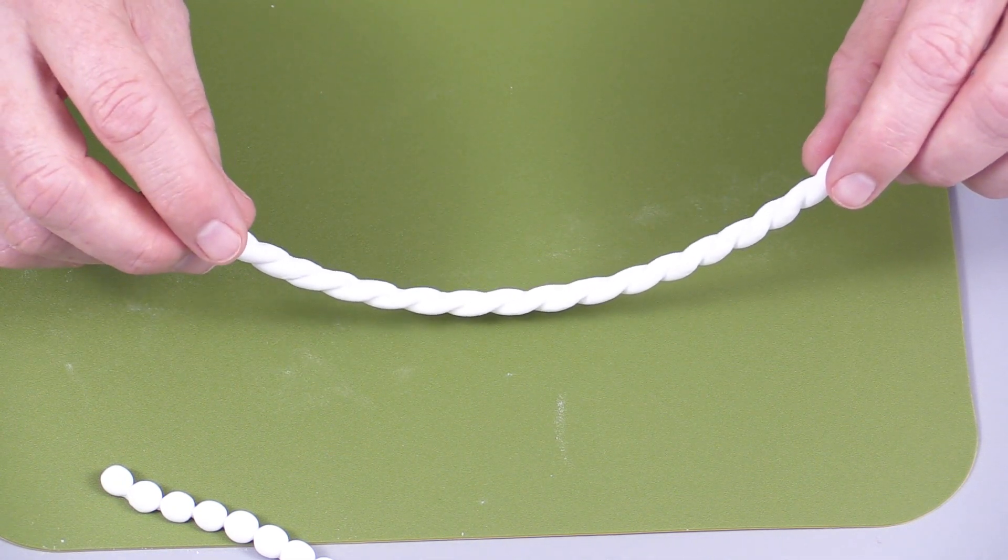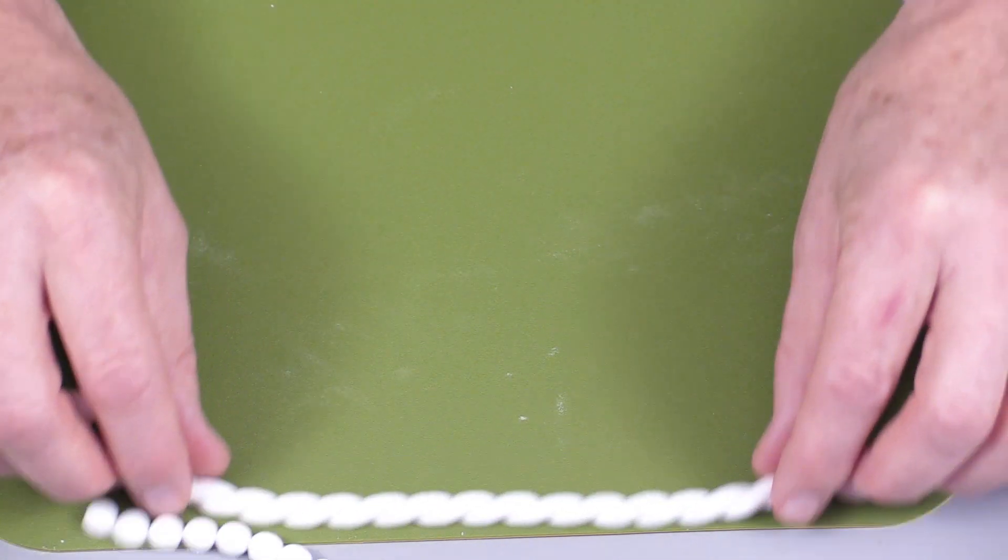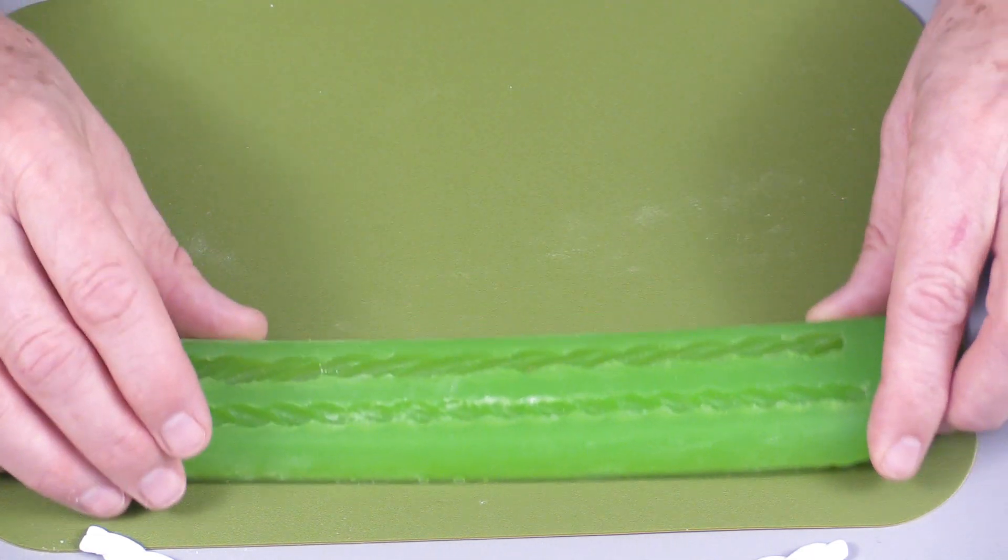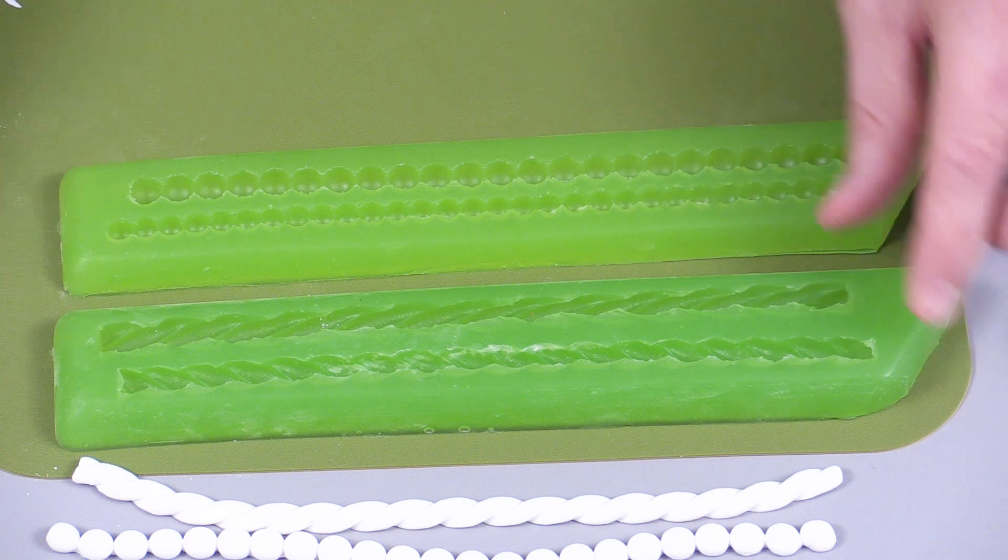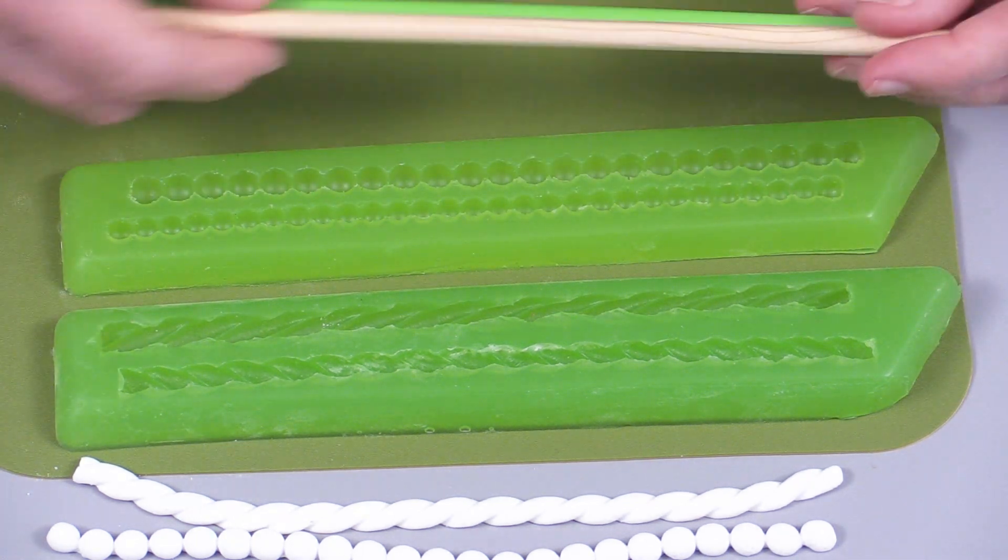So here we have the Easy Strand of Pearls, the Easy Rope, and the Easy Mold Sticks.